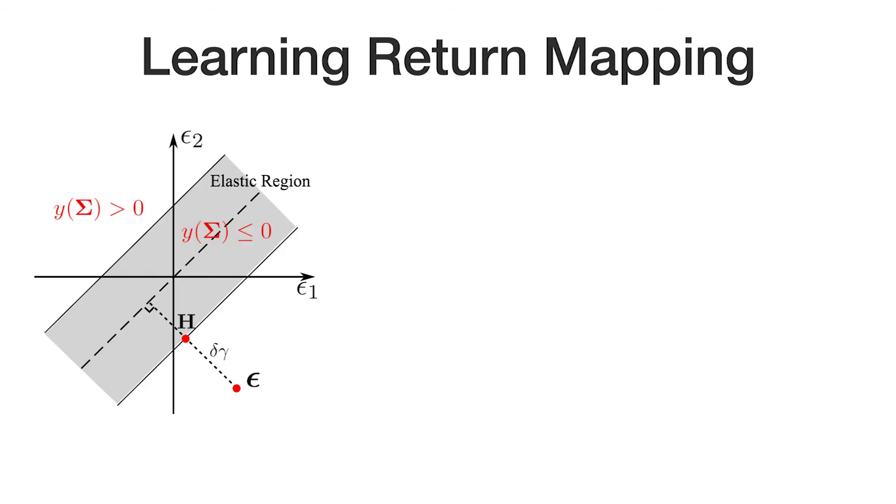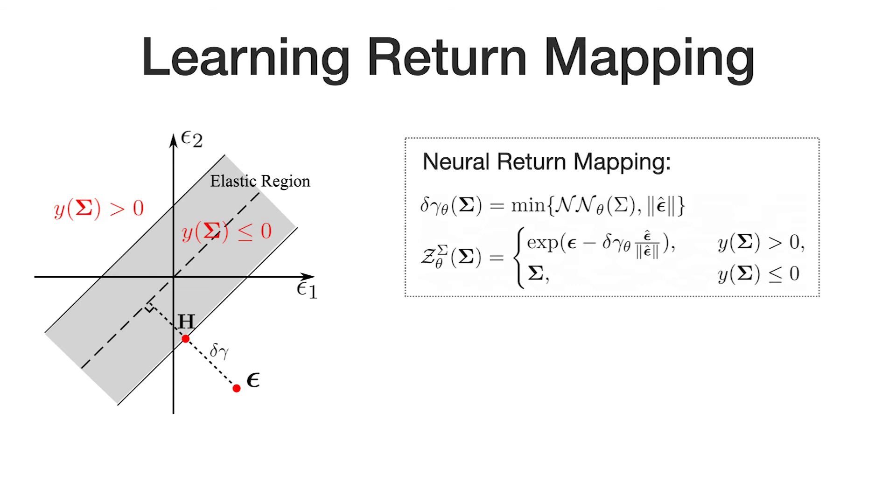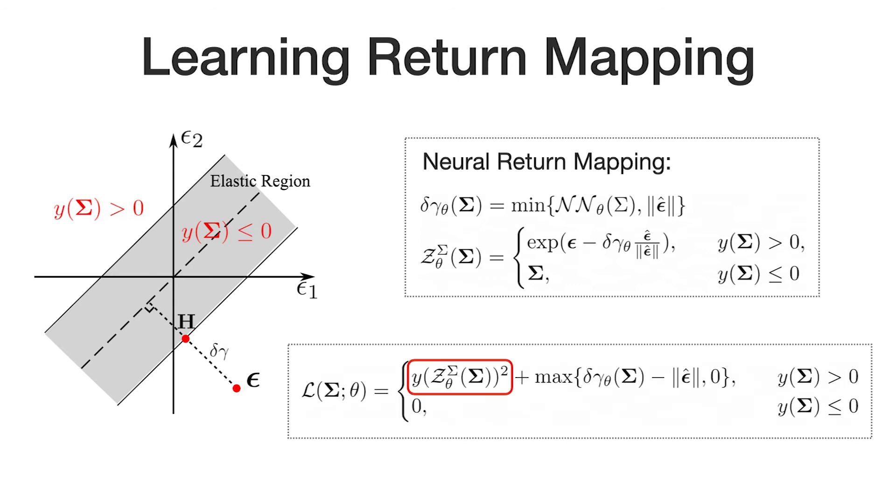The return mapping required by PlasticityNet can be learned as well. The elastic region is represented by an implicit function. We use a neural network to predict the distance to the elastic boundary. We train this network by leveraging the differentiability of the implicit representation.